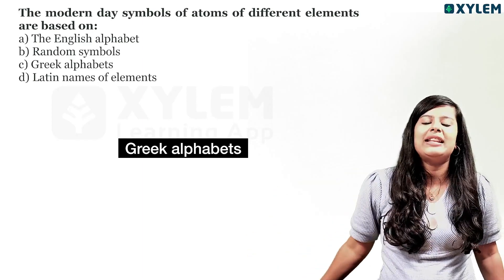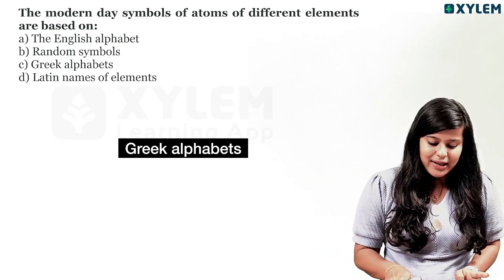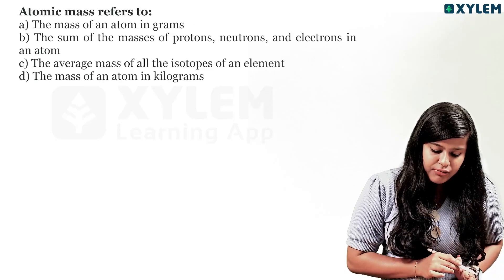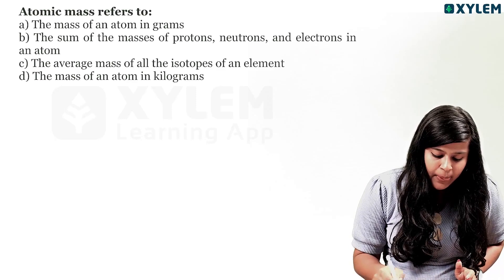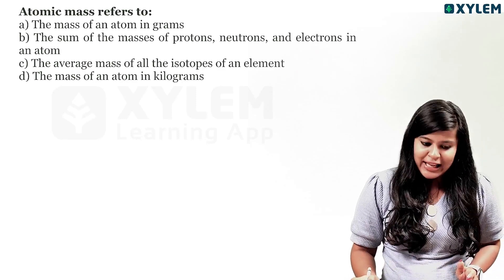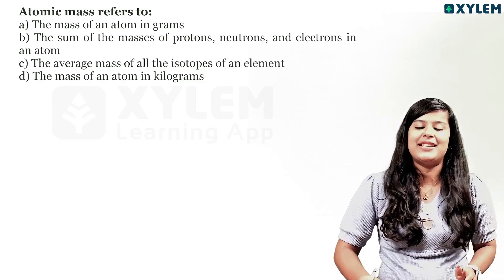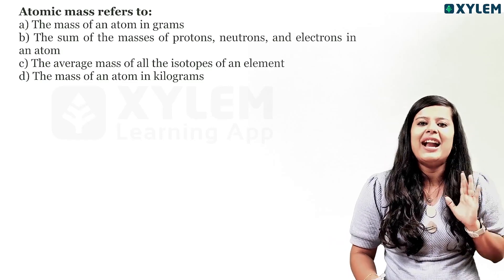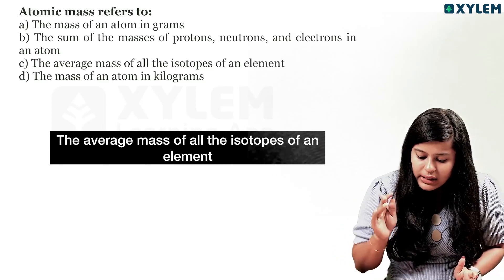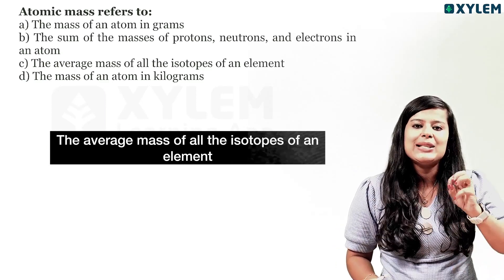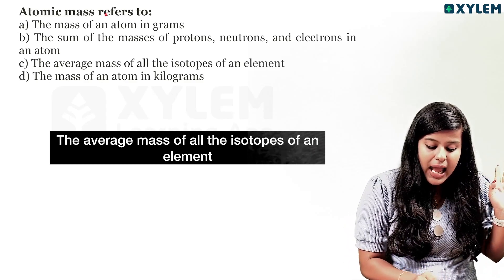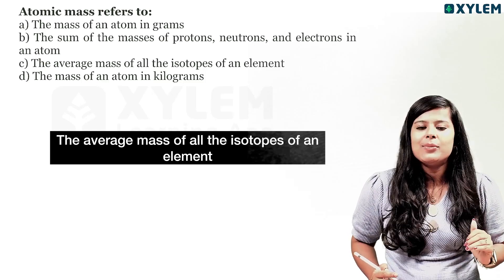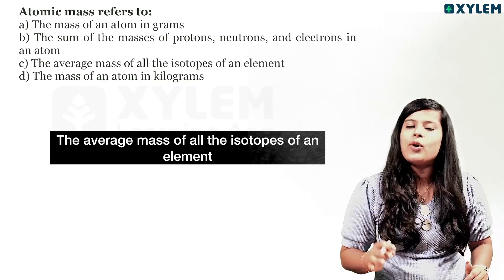Next question: atomic mass is defined as the sum of the masses of protons, neutrons and electrons; the average mass of all the isotopes of an element; or the mass of an atom in kilograms. The answer is: the average mass of all the isotopes of an element. One element has isotopes, and the average mass of all isotopes is the atomic mass.